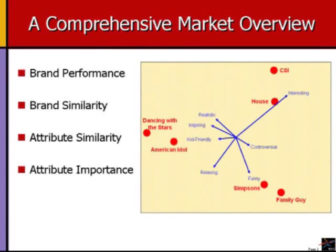There are four interpretations of a biplot perceptual map. Brand Performance: how well each brand in the market is perceived to perform on each attribute. Brand Similarity: how similar versus differentiated each brand is from the other brands of the market. Attribute Similarity: how correlated attributes are to one another, and thus how much dimensionality or complexity there is in the market. And Attribute Importance: how important each attribute is.